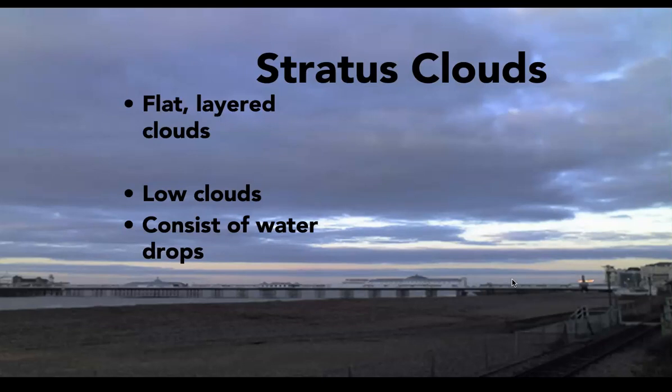These are stratus clouds. Strata means layered, so these are flat, layered clouds. Generally they're low, flat, layered clouds. Because they're low-level clouds, they're made of water drops. It doesn't always end up raining when it looks like this — sometimes it's just an overcast sort of day — but it certainly can lead to rain.